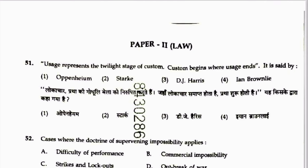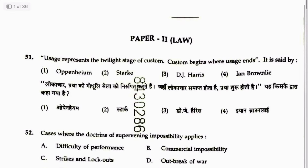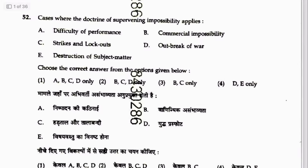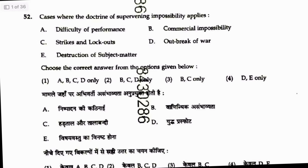Moving on to Part 2, Question 51: Usage represents the direct stage of customs — customs begins where usage ends. This statement is attributed to Salmond. The answer is next.